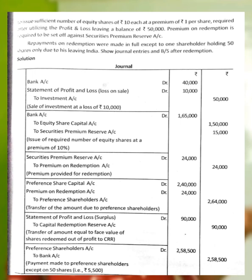Repayments on redemption were made in full except for one shareholder holding 50 shares, who is untraceable. We need to show the journal entries and balance sheet after redemption of preference shares.